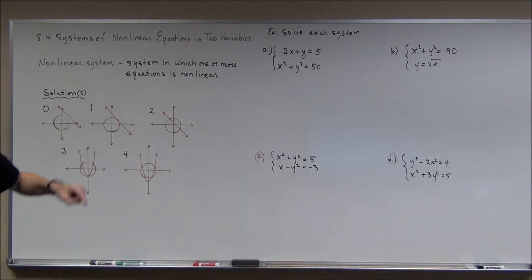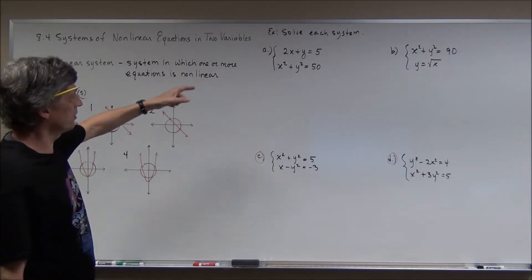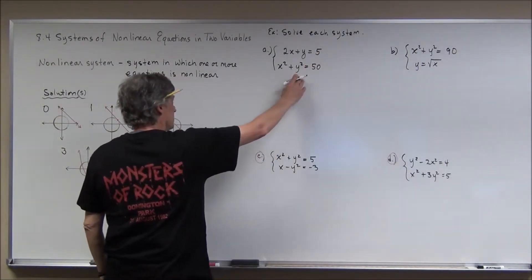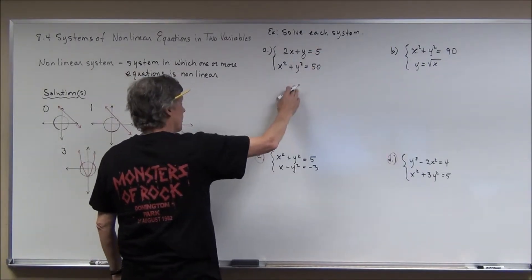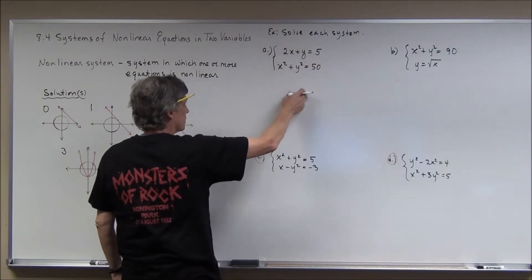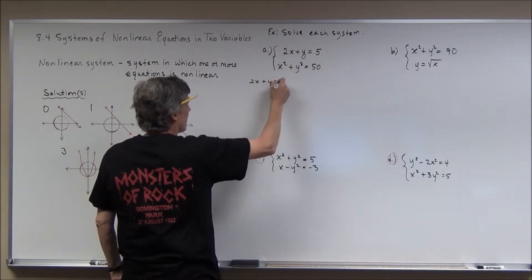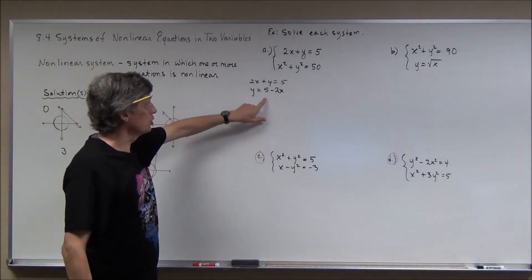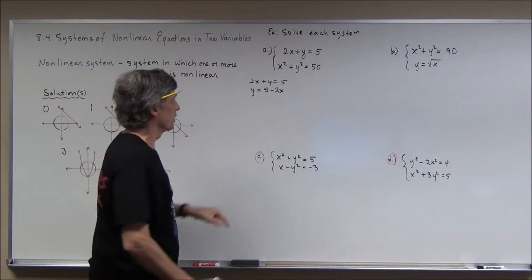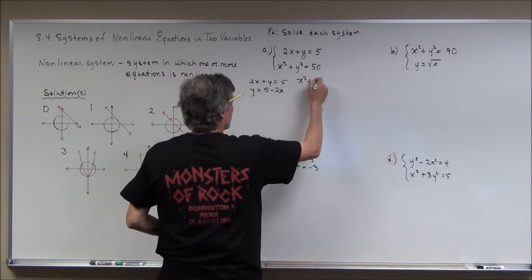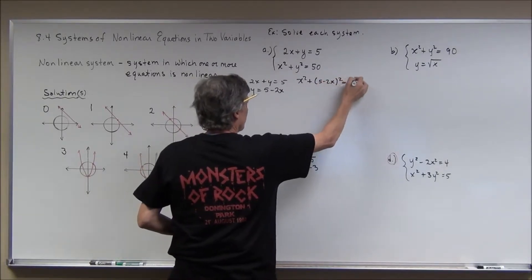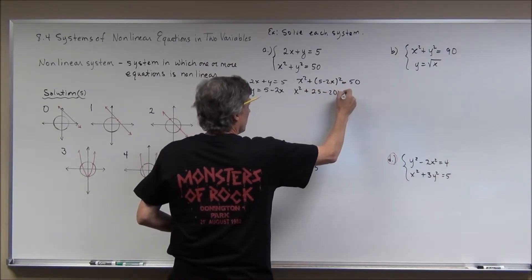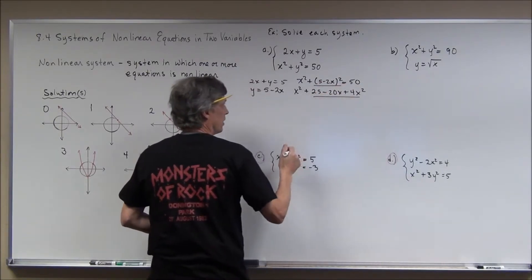When one equation is linear and the other is not, take the linear equation and solve for x or y. It's probably easier to solve for y. Taking 2x + y = 5, subtract 2x from both sides to get y = 5 − 2x. Now use substitution by plugging this in for y in the other equation: x² + (5 − 2x)² = 50. Squaring the binomial gives x² + 25 − 20x + 4x² = 50.